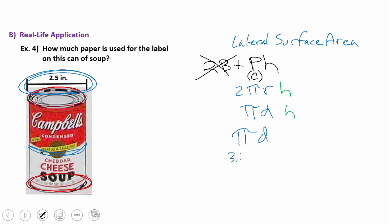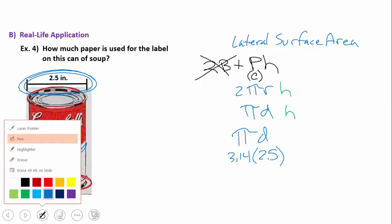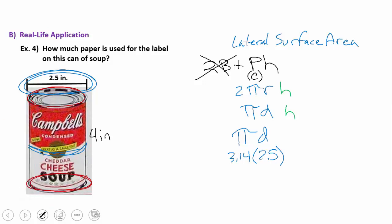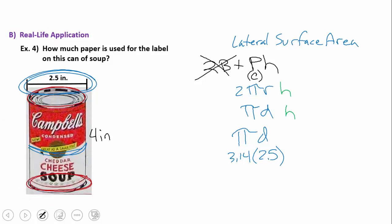That's 3.14 times the diameter of 2.5, and I'm going to multiply that by the height. I recognize that I forgot to put the height on there when I photocopied this into your notes. Let's add that in real fast. The height is actually 4 inches, so now we can put that 4 inch height into our formula.